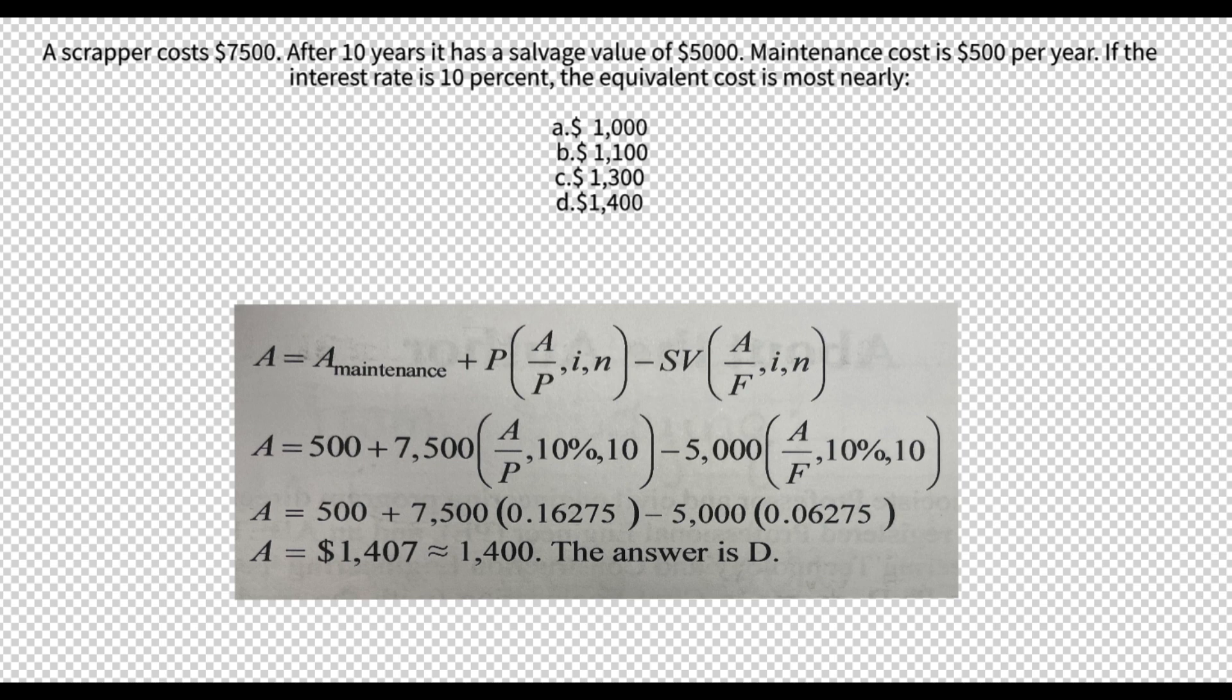However, it's clear that the correct answer would be closest to option C, which is $1,300. This is the option that most closely approximates our calculated EAC of $2,500.